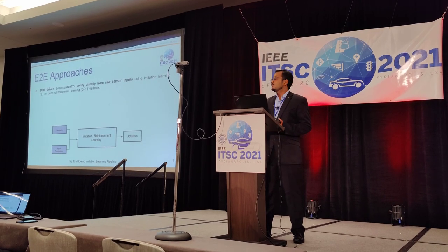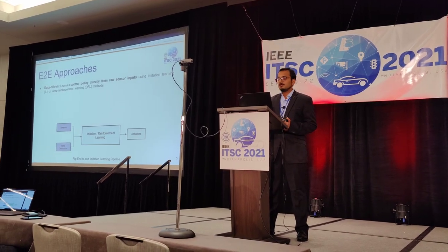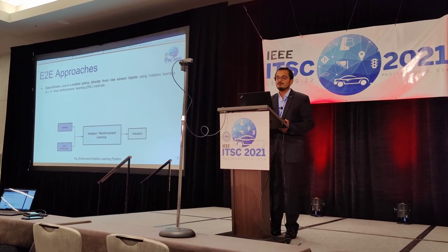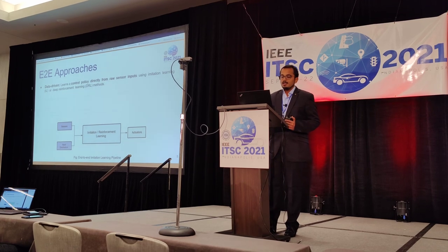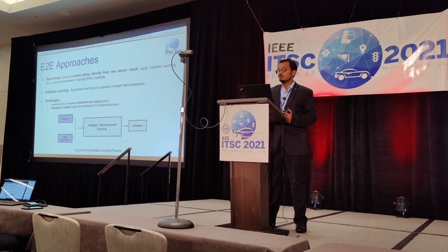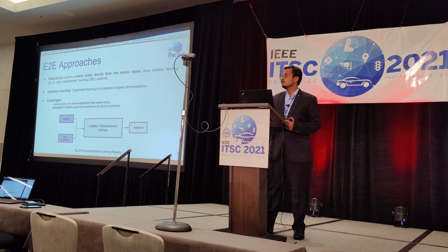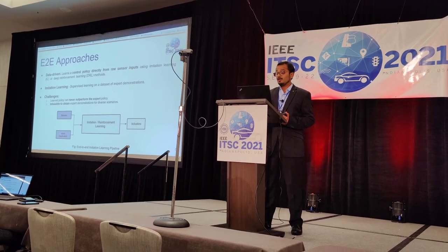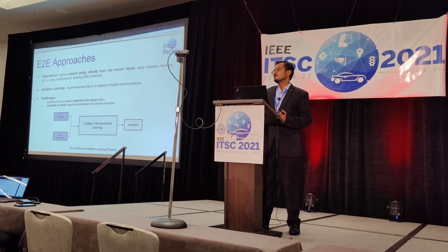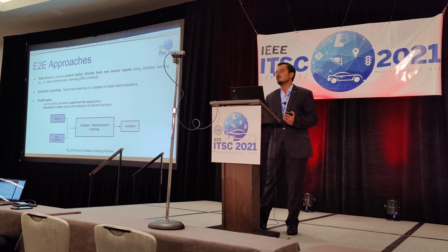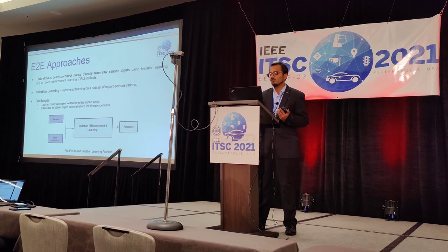The next set of approaches are data-driven end-to-end approaches that learn a control policy directly from raw sensor inputs using imitation learning or deep reinforcement learning. Imitation learning refers to supervised learning on a dataset of expert demonstrations. Although these approaches do not require any engineering efforts, they have their own set of challenges: the imitation learning policy can never overcome the expert policy, and it is always impractical to obtain expert demonstrations for all the scenarios that a self-driving car cares about in the real world.